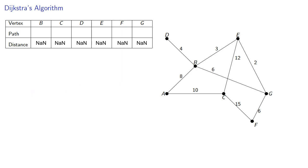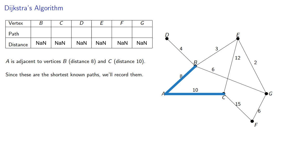So we'll expand out from A. A is adjacent to vertices B, distance 8, and C, distance 10. Since these are the shortest known paths, we'll record them, that's A to B with distance 8, and A to C with distance 10. And we'll also mark the edges to indicate we've checked them. We'll thicken them on our diagram.